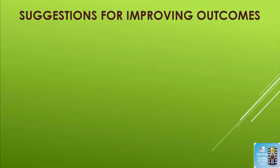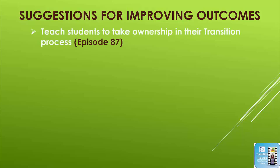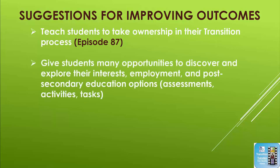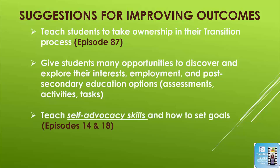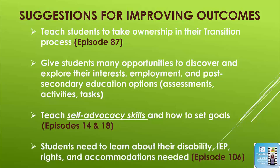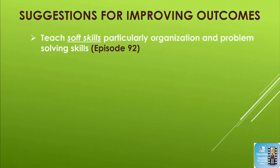Here are some suggestions to help students with traumatic brain injury improve their outcomes when transitioning to adult life. First, teach students to take ownership in their transition process. Give students many opportunities to discover and explore their interests, employment, and post-secondary education options through assessments, activities, and tasks. Teach self-advocacy skills and how to set goals. Students need to learn about their disability, IEP, rights, and accommodations needed. Teach soft skills, particularly organization and problem-solving skills.